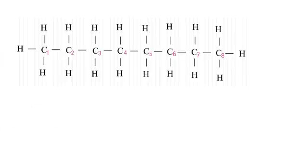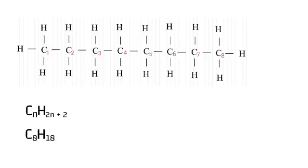Here they drew a structure for us, and they asked me to write a molecular formula. A molecular formula indicates how many atoms of carbon and how many atoms of hydrogen the structure has. We simply count the number of carbon atoms — we have 8. The structure has single bonds between the carbon atoms, which means it's an alkane. So take that 8, multiply by 2, and add 2, which gives us C₈H₁₈. We got to 18 because 2 times 8 gives us 16, and you add 2 to get 18.